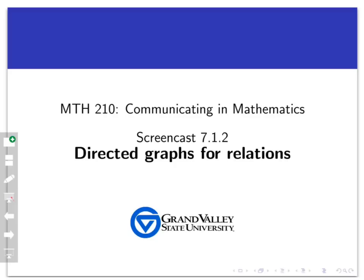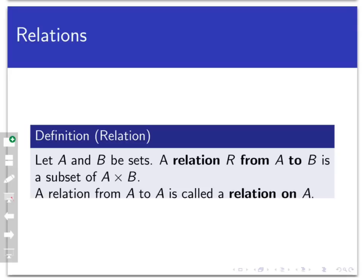We saw in the last video what a relation is. A relation from A to B is just a set of ordered pairs in A cross B, or a subset of A cross B. When the A and the B are the same, so we just have a bunch of ordered pairs from A cross A, then we say that the relation is a relation on A.